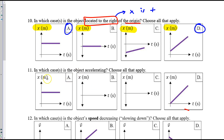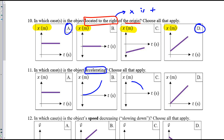Number eleven is interesting because it's not something we had seen directly in class. It asks, in which cases is the object accelerating? To accelerate, the velocity must be changing over time. How do we see velocity on a position graph? Velocity is slope.